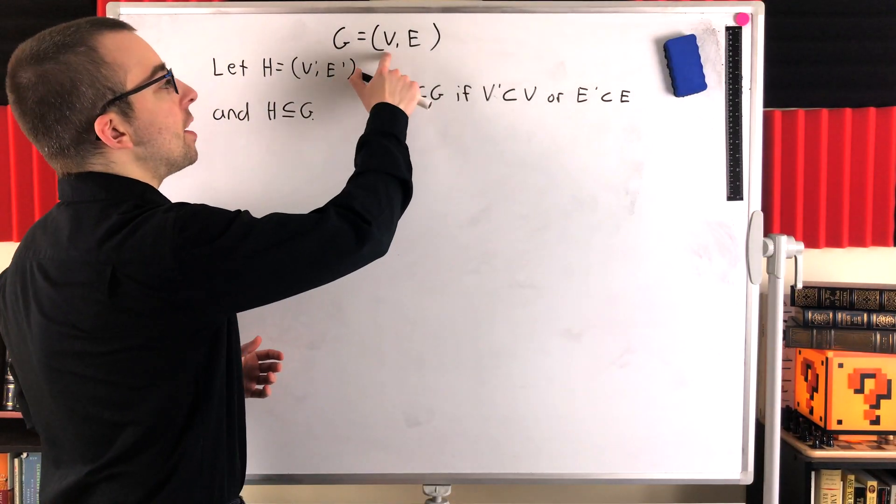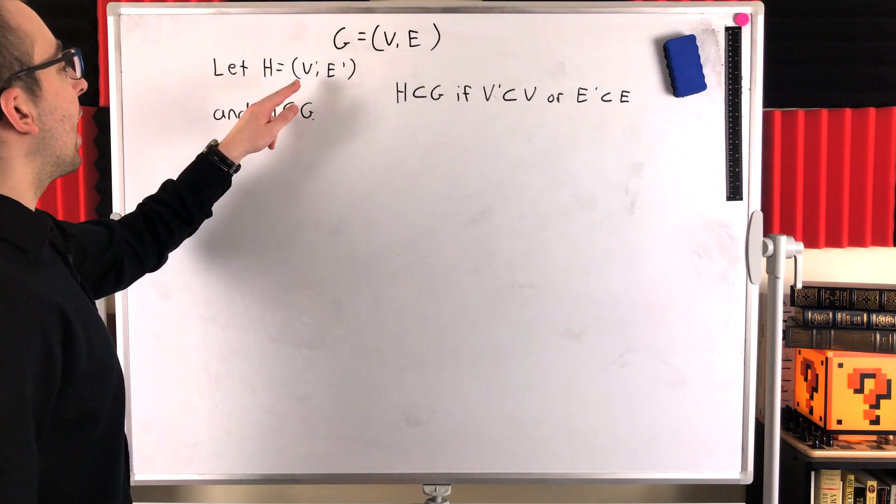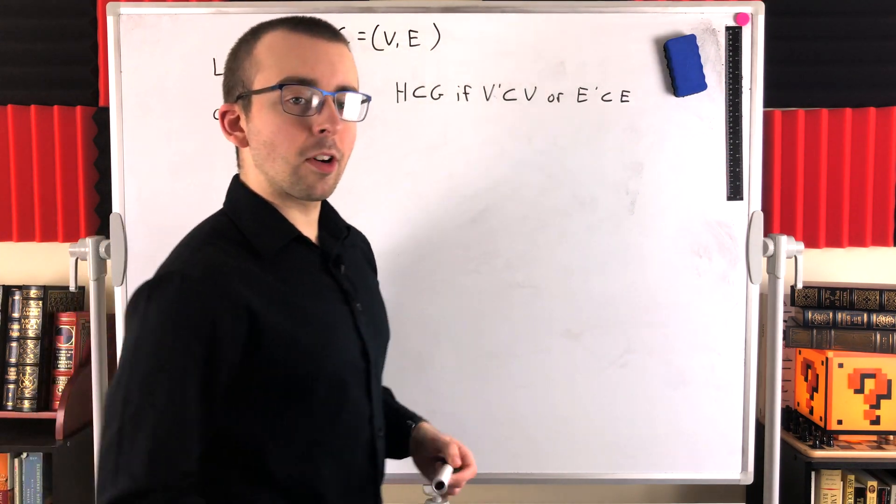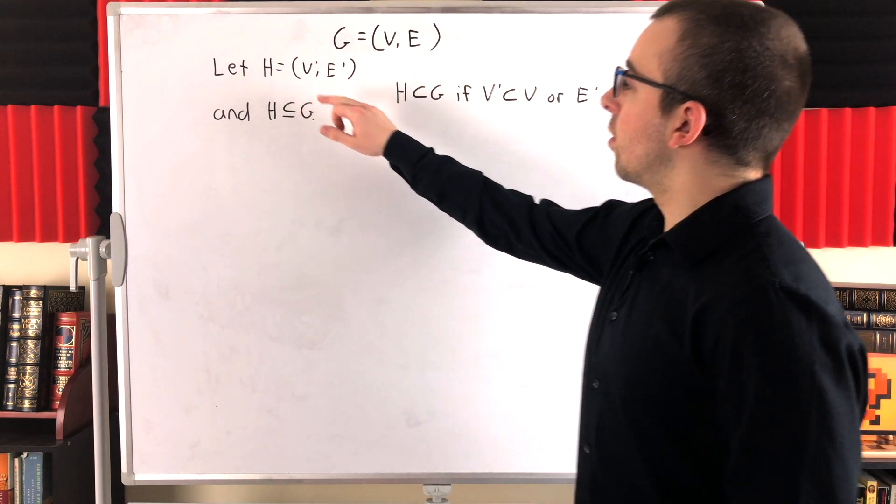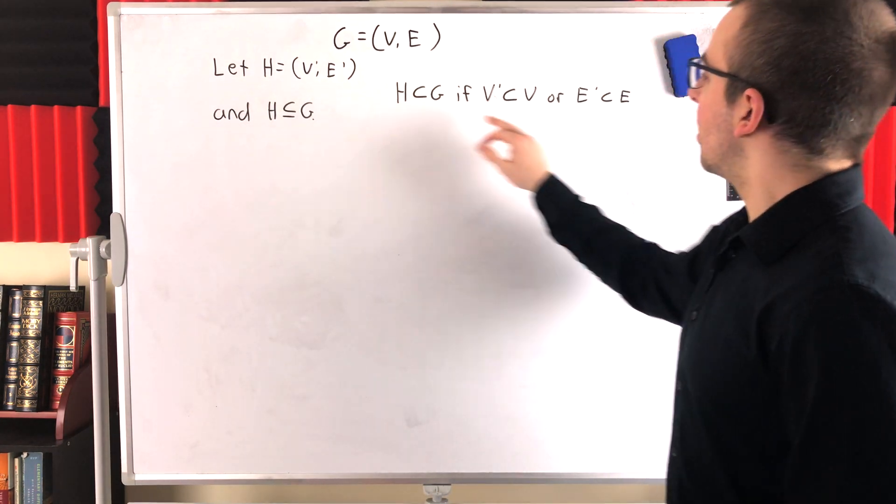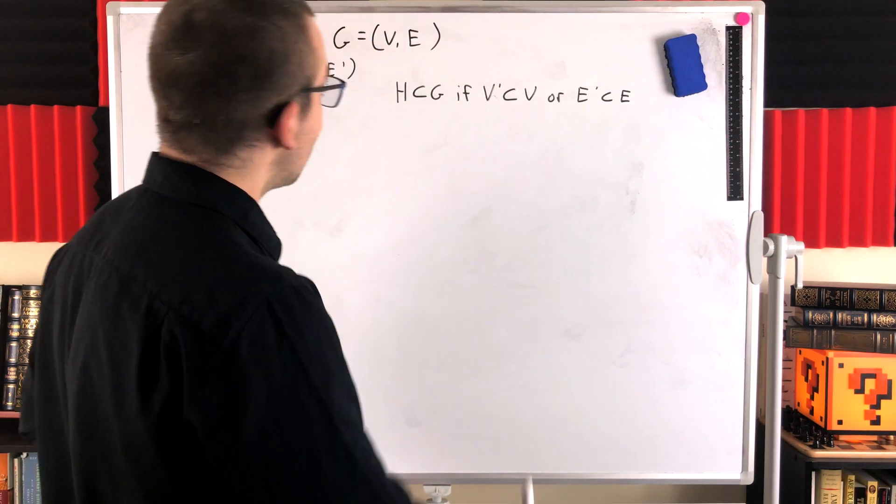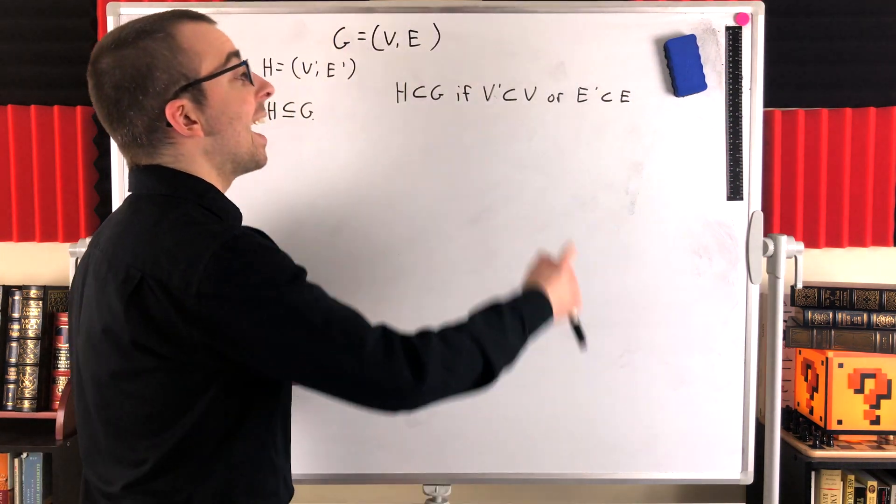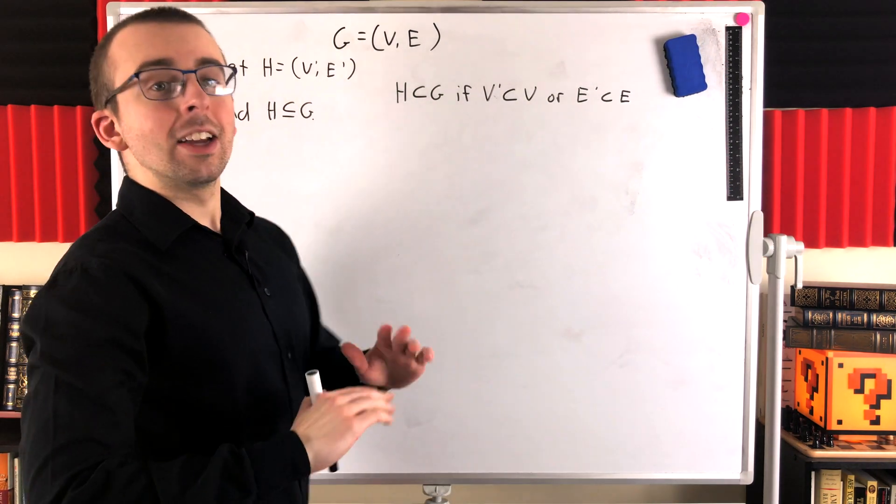So, say we've got a graph G that has a vertex set V and edge set E. And then, say we've got this subgraph of G called H that has vertex set V' and edge set E'. Then, we would say that H is a proper subgraph of G if H is not equal to G, which means that either the vertex set of H is a proper subset of G's vertex set, or the edge set of H is a proper subset of G's edge set, or, of course, both of these conditions could be fulfilled. So, for H to be a proper subgraph of G just means that H is a subgraph of G and G has some vertices or some edges or some vertices and edges that its proper subgraph H does not have.